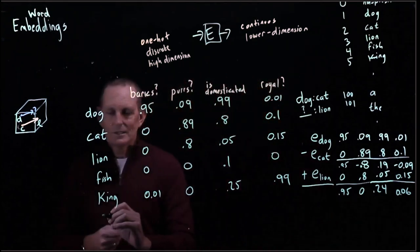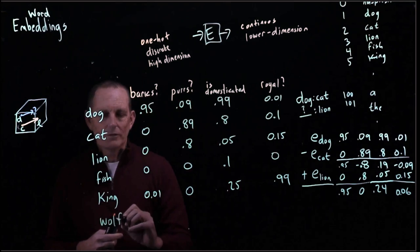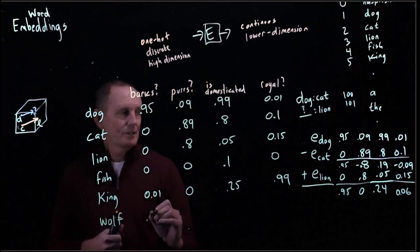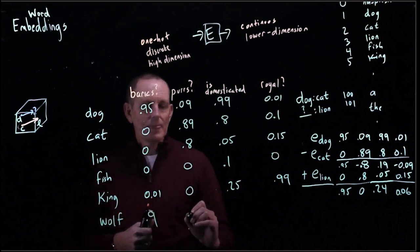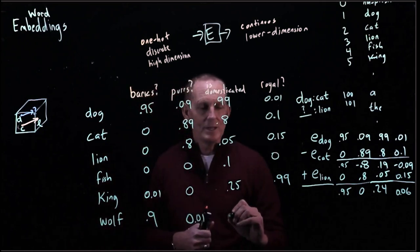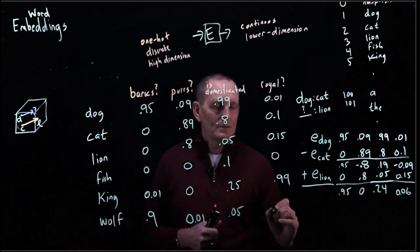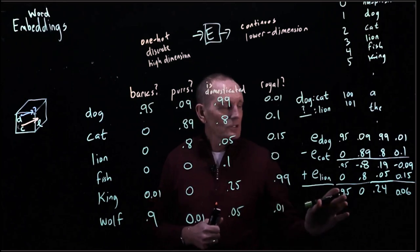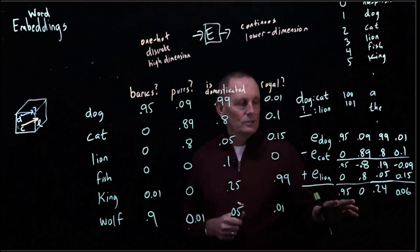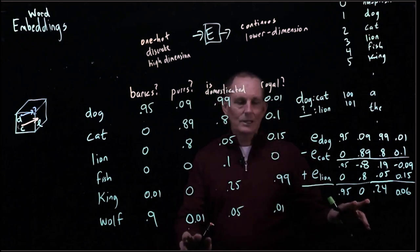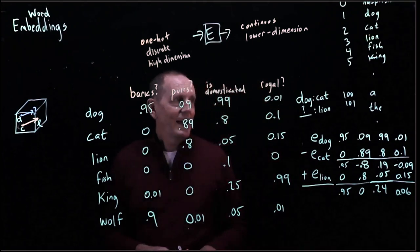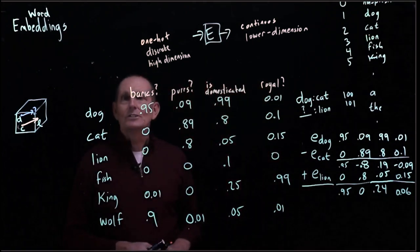So if we looked, we might find something like a wolf, which I hear wolves do bark. So let's say a 0.9 on barking. They don't purr, maybe they purr once in a while, and not domesticated, and not royal. So if we went and said, what's the closest value in here to this? Well, this is really pretty close. The closest one we would say is, a dog is to a cat as a wolf is to a lion.